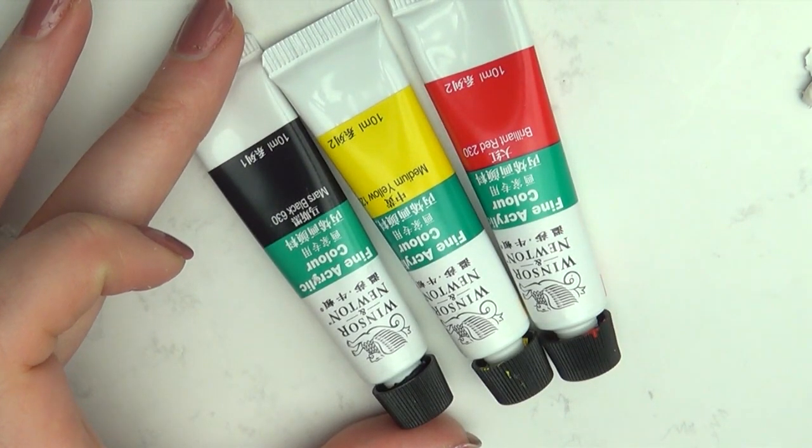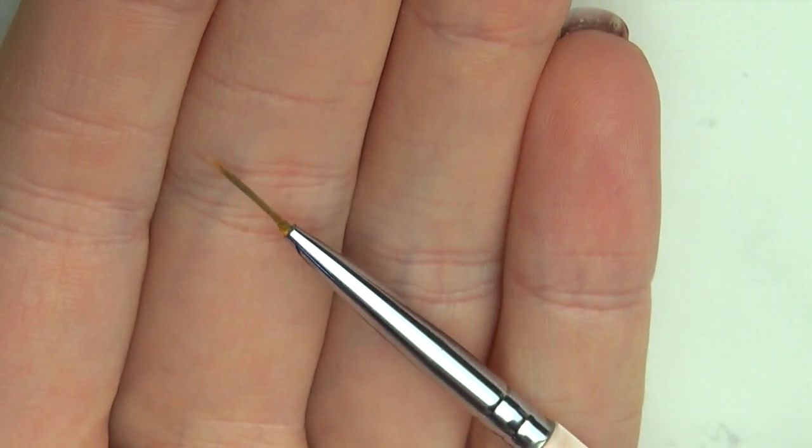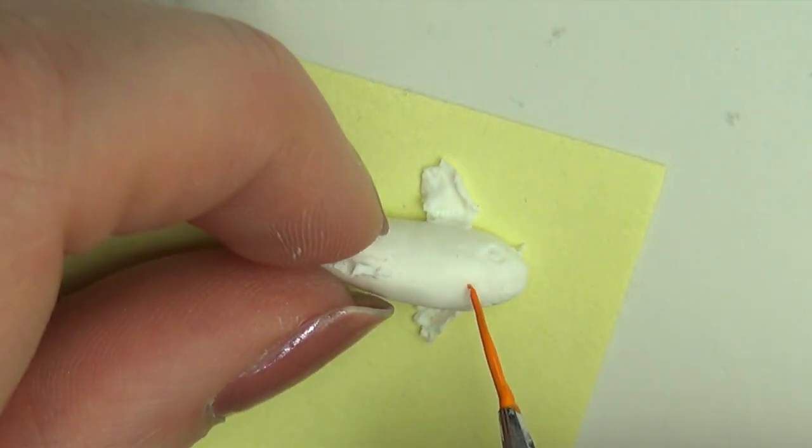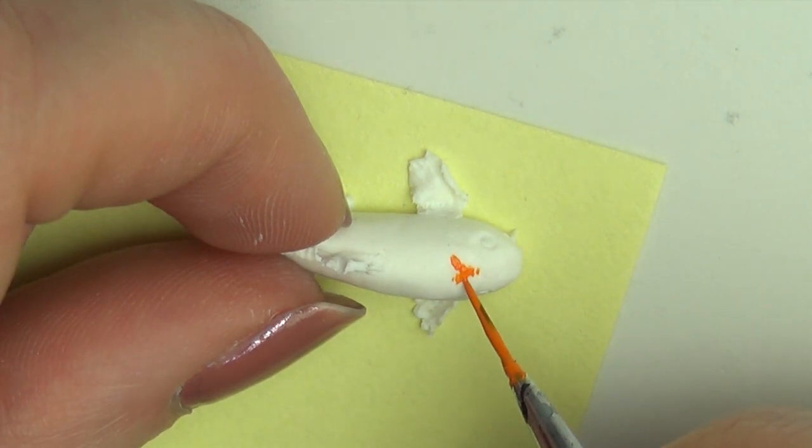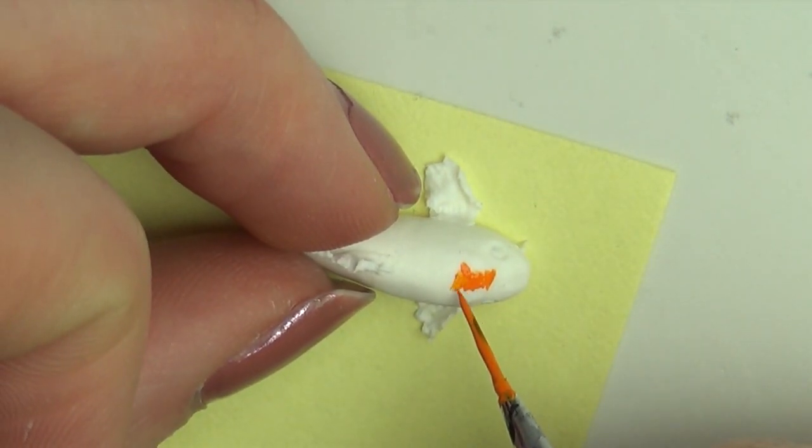Once they're cooled, we're gonna paint them with some acrylic paint. I'm also using a fine detail brush. I made three fish so I tried to paint them a little differently and I just found inspiration in my reference pictures.